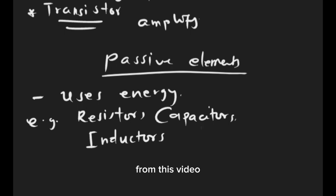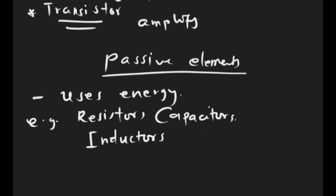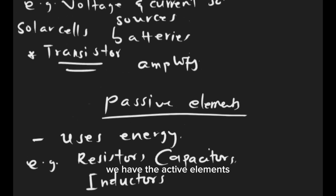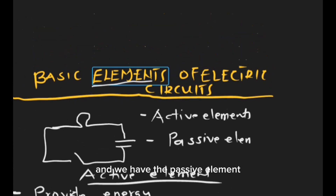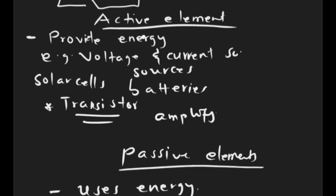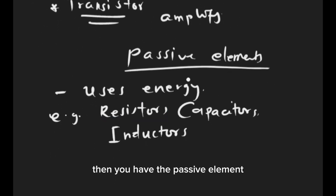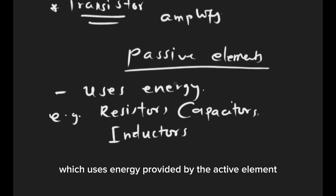From this video we've been able to establish that there are two main classifications of electrical elements: active elements and passive elements. Active elements function to provide energy — examples are voltage and current sources, batteries, and the special type, the transistor. Passive elements use the energy provided by active elements — examples are resistors, capacitors, and inductors.